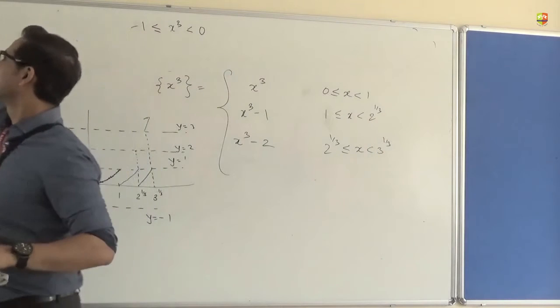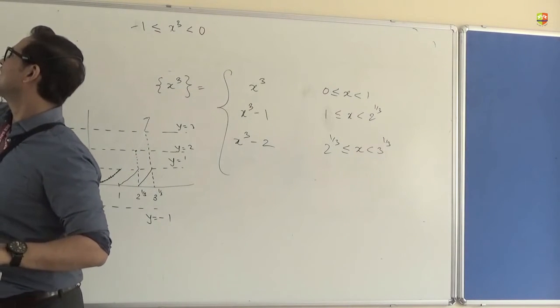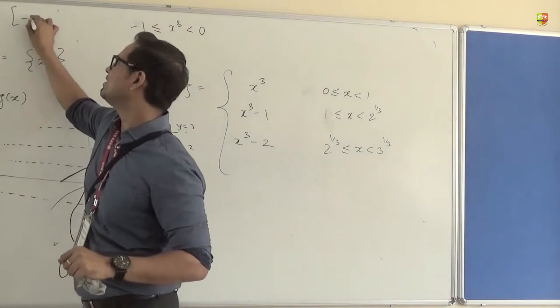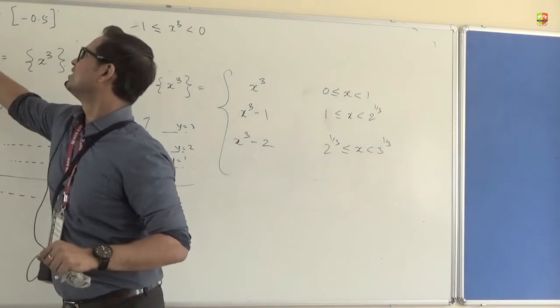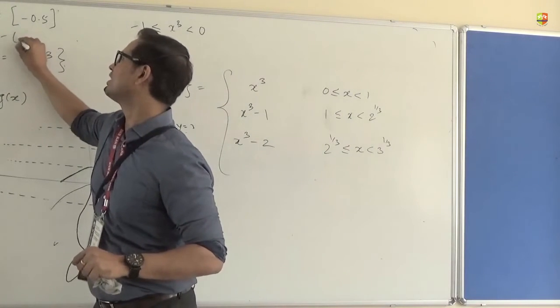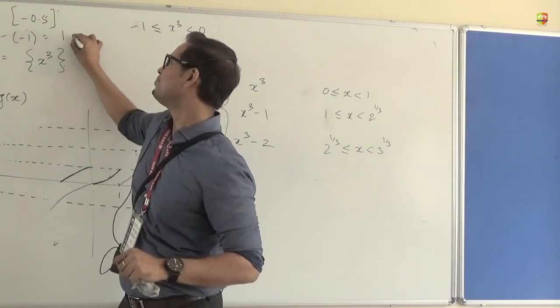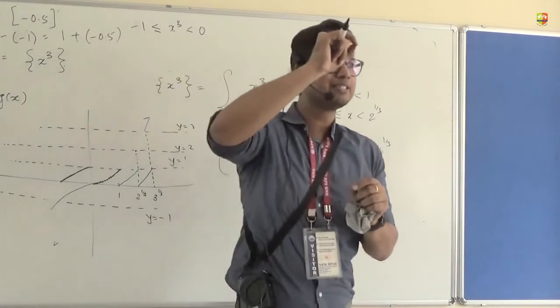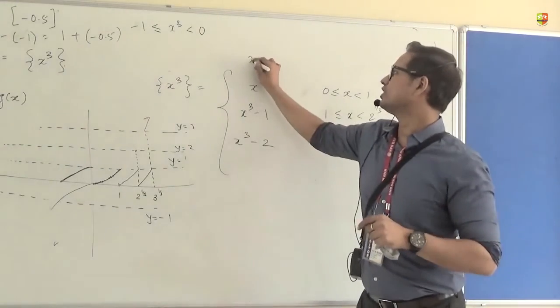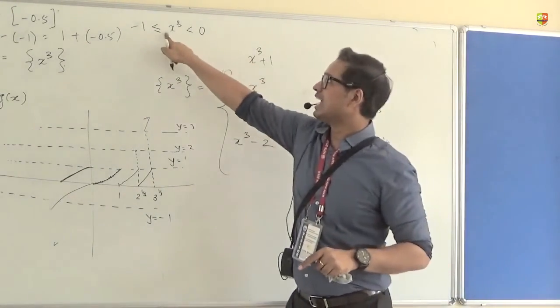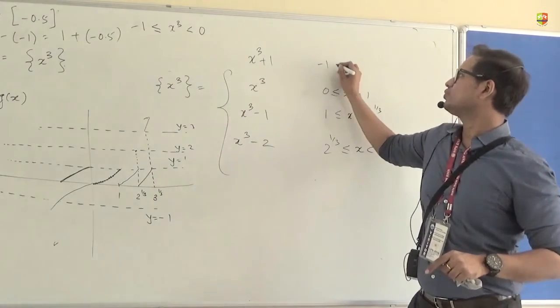Come on. What is the fractional part of negative 0.5? What will you say? Negative 0.5 minus gif of negative 0.5, right? Which is negative 0.5 minus of minus 1. Which is 1 plus minus 0.5, right? So you are adding a 1 to it, right? That means your function would behave as x cube plus 1 when your x is lying between minus 1 to 0.